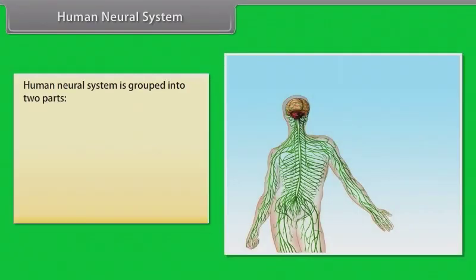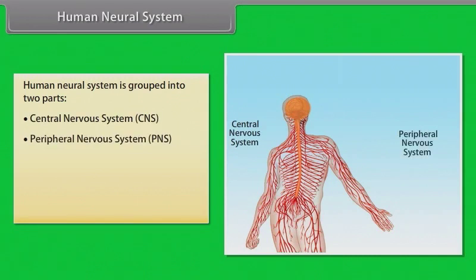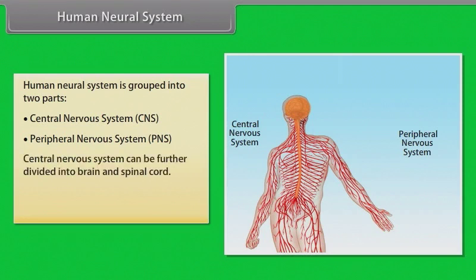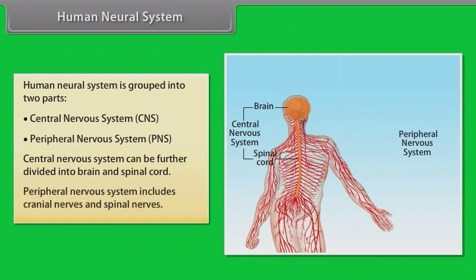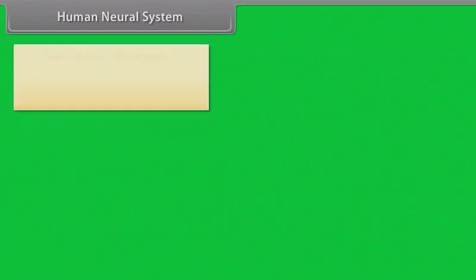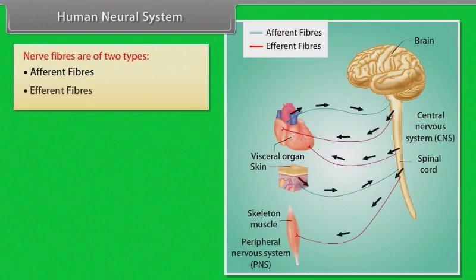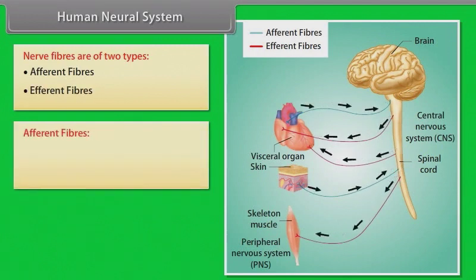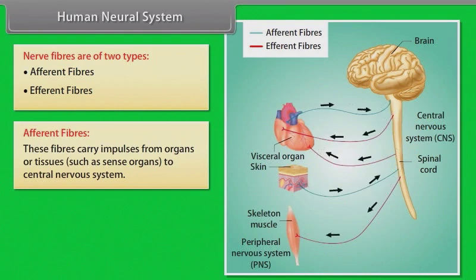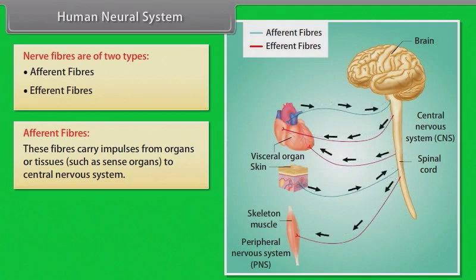The human neural system is grouped into two parts: the central nervous system and the peripheral nervous system. The central nervous system can be further divided into brain and spinal cord. The peripheral nervous system includes cranial nerves and spinal nerves. Nerve fibers are of two types: afferent fibers, which carry impulses from organs or tissues to the central nervous system.